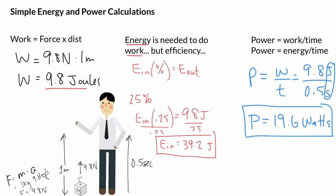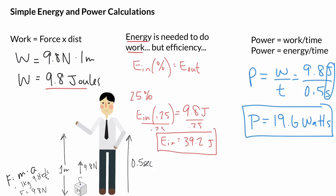So putting all this together from beginning to end, we could say: here's a scenario where a person lifts a box. How much work was done to the box? Well, based on the force and the distance, 9.8 joules of work was done to the box. Then we could say, how much energy did they have to have in order to do that? Well, based on saying that they're 25 percent efficient...